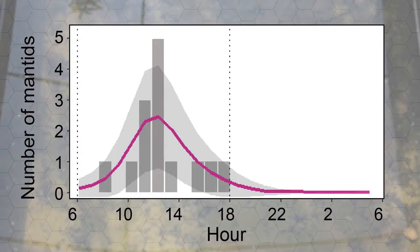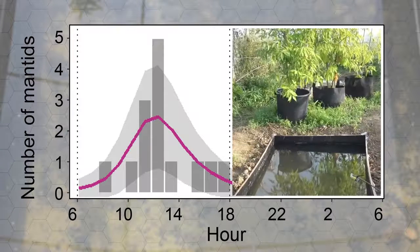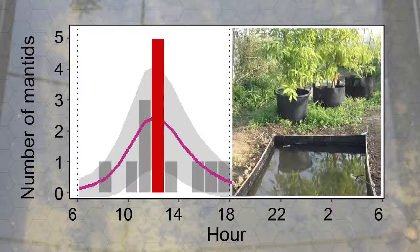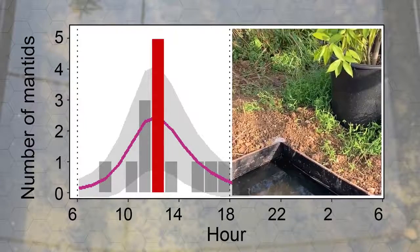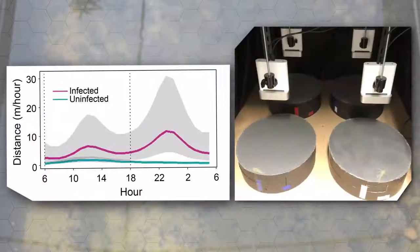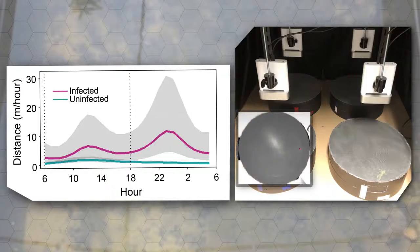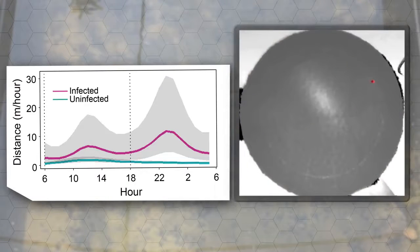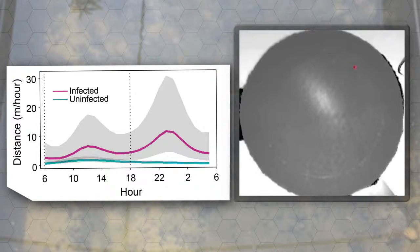Another noteworthy finding is that the water entry behavior of the infected hosts occurred most frequently around noon. In a laboratory experiment, the infected mantis walked more than an uninfected mantis around noon. The daytime peaks of the mantis entry into water and walking distance during daytime were synchronized at noon.